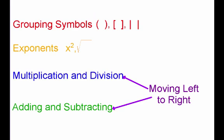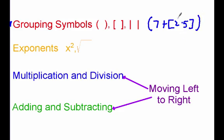Our first step in the order of operations is grouping symbols. Grouping symbols are things like parentheses, brackets, or the absolute value symbol. We always want to work from the inside out. For example, if I gave you in parentheses 7 plus, and then in brackets 2 times 5, I want to start inside the parentheses, and then inside the parentheses I have some brackets. So I start with 2 times 5, which is 10. Then 7 plus 10 is 17. Start inside the smallest set of grouping symbols and work your way out.